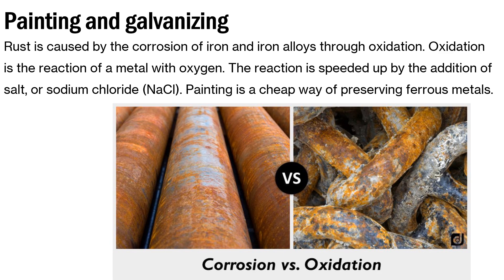Painting and galvanizing. Rust is caused by the corrosion of iron and iron alloys through oxidation. Oxidation is the reaction of a metal with oxygen. The reaction is speeded up by the addition of sodium chloride — salt. Painting is a cheap way of preserving ferrous metals.